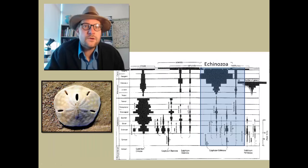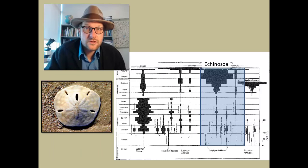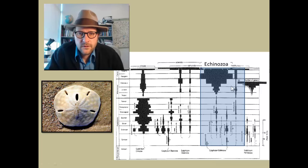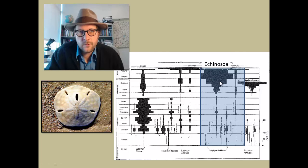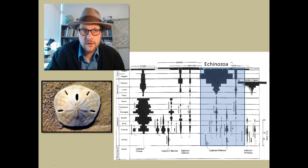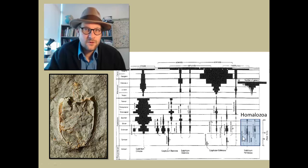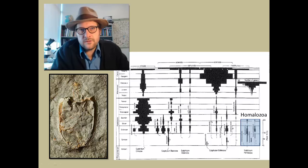The Echinozoans — sea cucumbers, sand dollars, sea potatoes, and sea urchins — have a fossil record extending back to the early Cambrian, but most of the diversity of the group appears in the later part of the Mesozoic, with many common forms not appearing until the Cenozoic or at least the Cretaceous. The last group is the Homalozoans, the Calcichordates. This weird group appears during the Cambrian and extends into the Devonian, represented by an unusual primitive stock of echinoderms, or related forms at least.